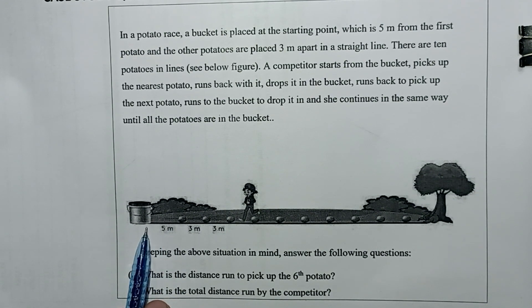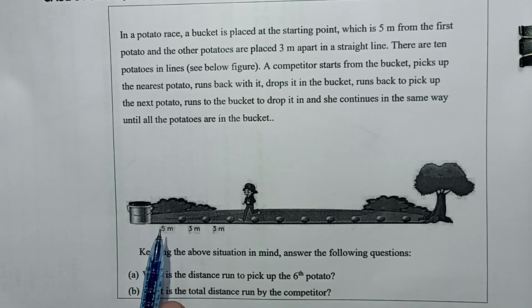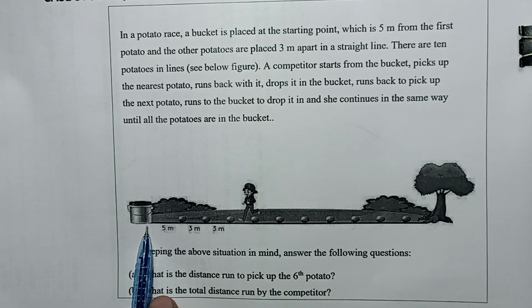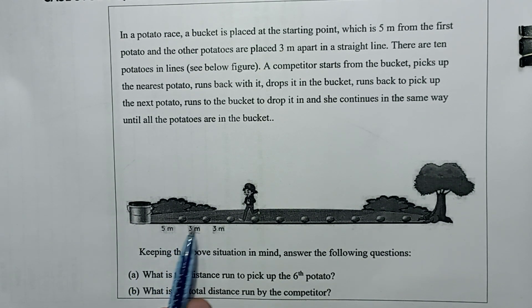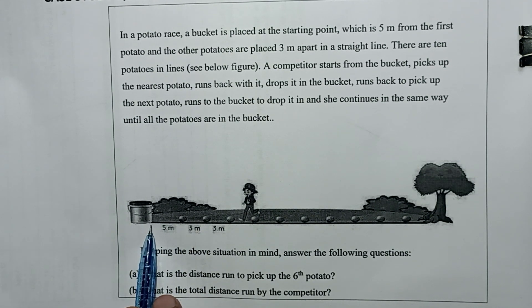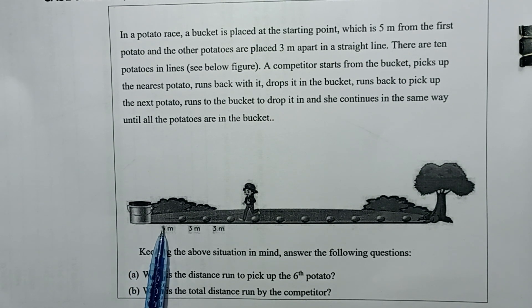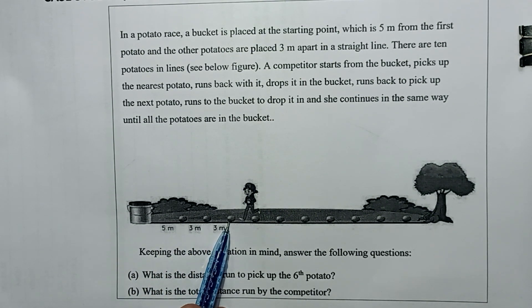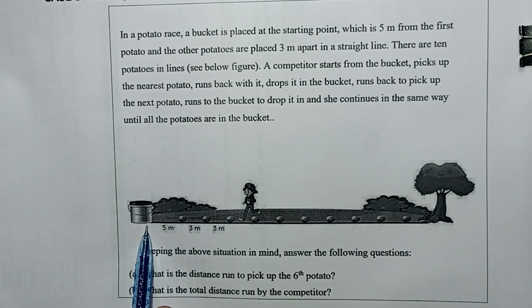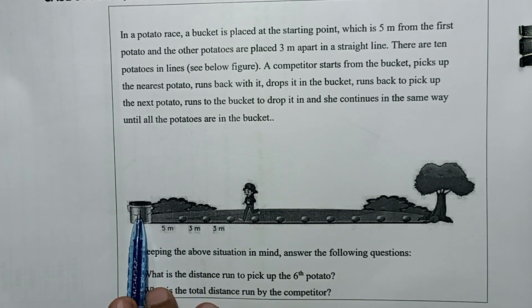Total distance covered for one potato: for the first potato it is 10 meters. For the second potato, she goes 5 plus 3 = 8 meters and returns 8 meters, so total distance traveled is 16 meters. For the third potato: 5 + 3 + 3 = 11 meters, so double = 22 meters traveled.